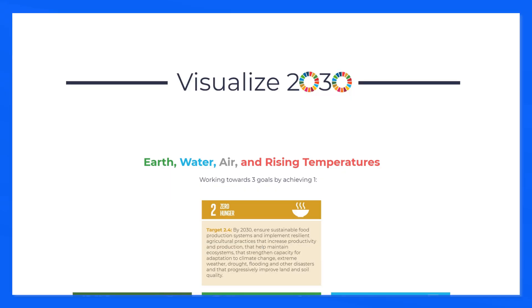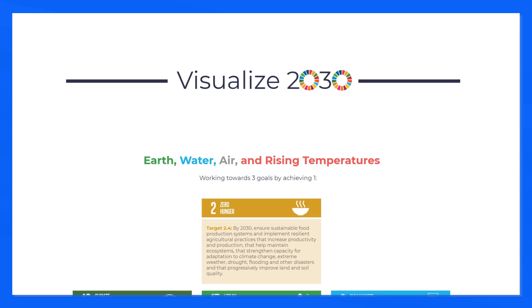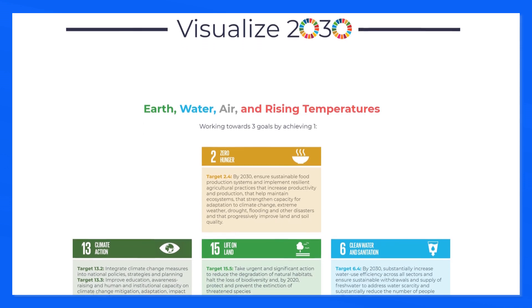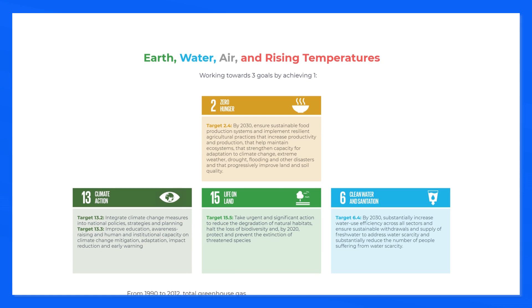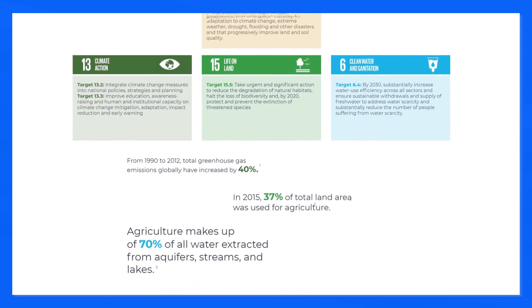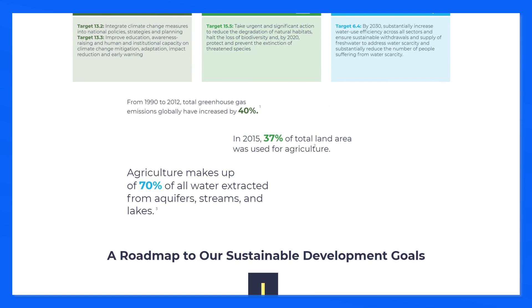Congrats on being one of the five winners of the Visualize 2030 contest. Can you take the audience through the visualization you built and tell them about the story you're trying to tell throughout this entire dashboard? So I focused on a total of four of the sustainable development goals. I discuss how one of the targets in the zero hunger goal is to improve our agricultural practices and make them more sustainable, and by achieving this one, we can work towards three other goals: climate action, life on land, and having clean water and sanitation available to everyone. I realized that agriculture doesn't just affect climate change but affects so many different things in our environment, so I wanted to display this as a little roadmap towards achieving these goals and the different roadblocks getting in the way.